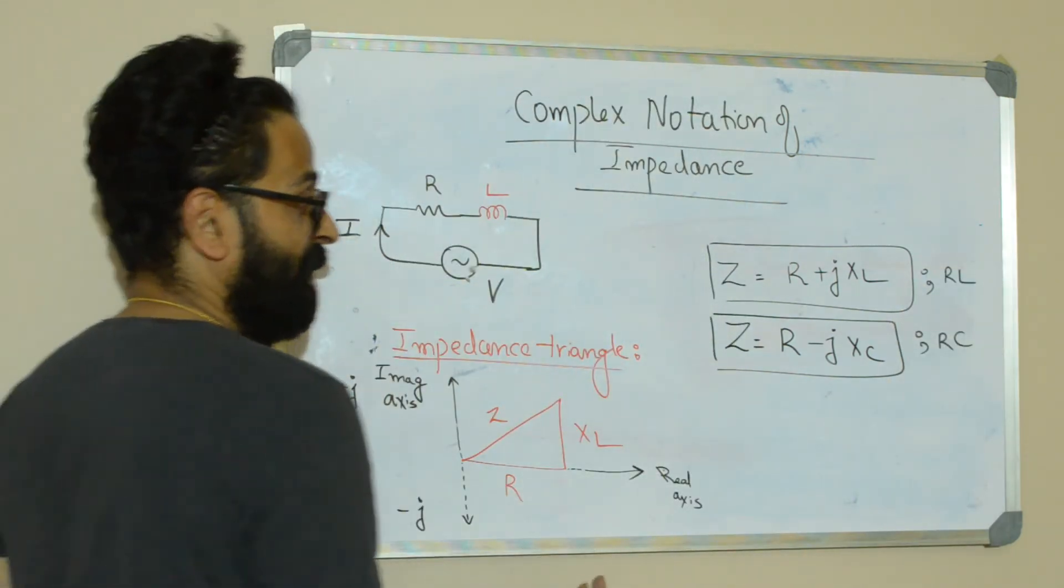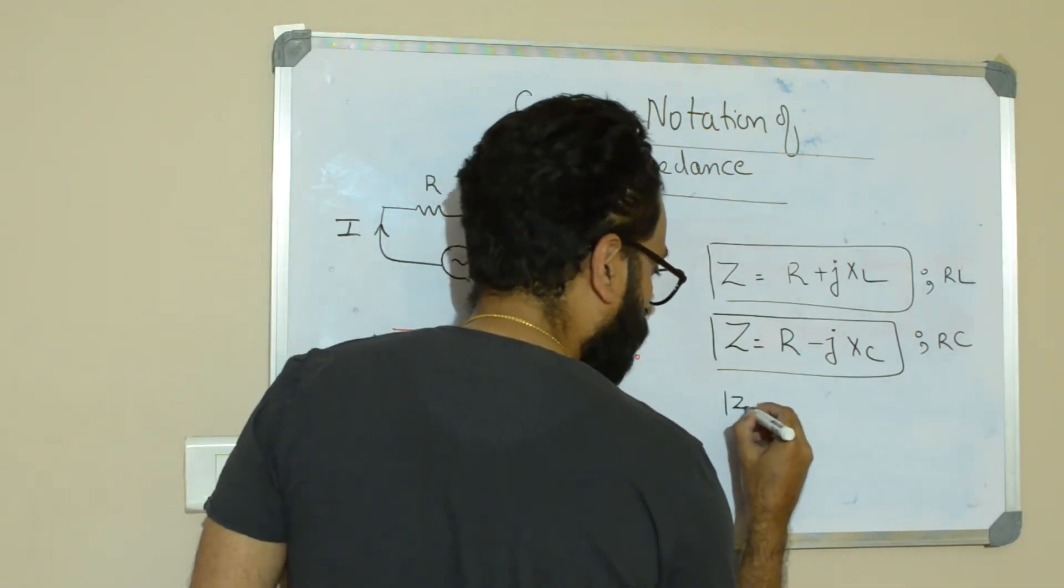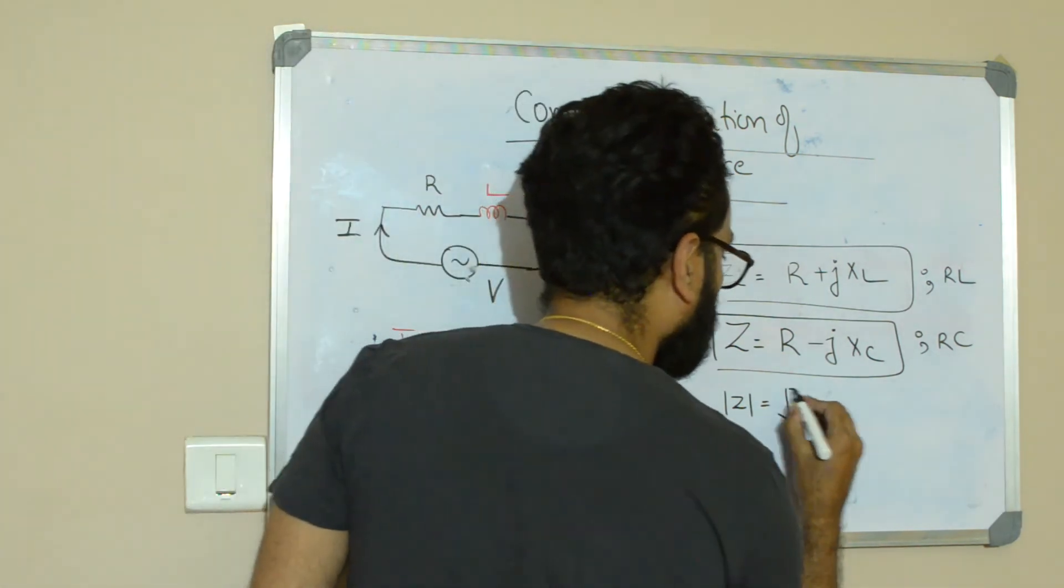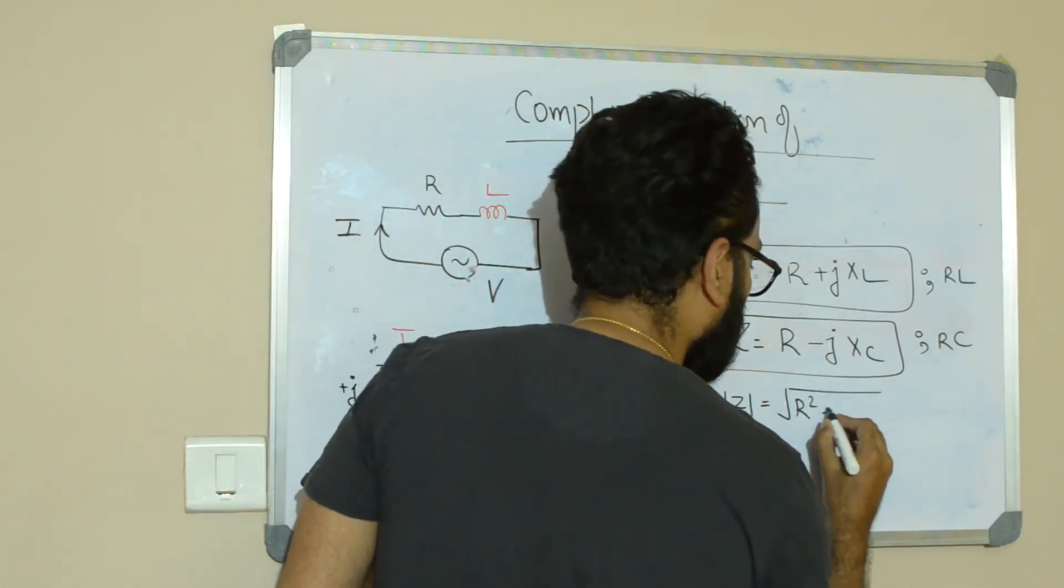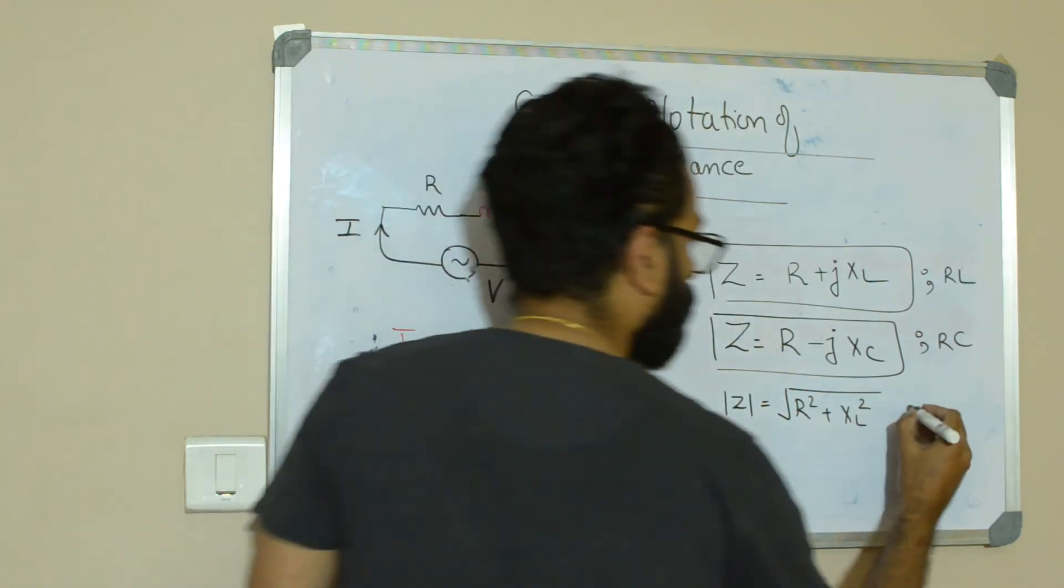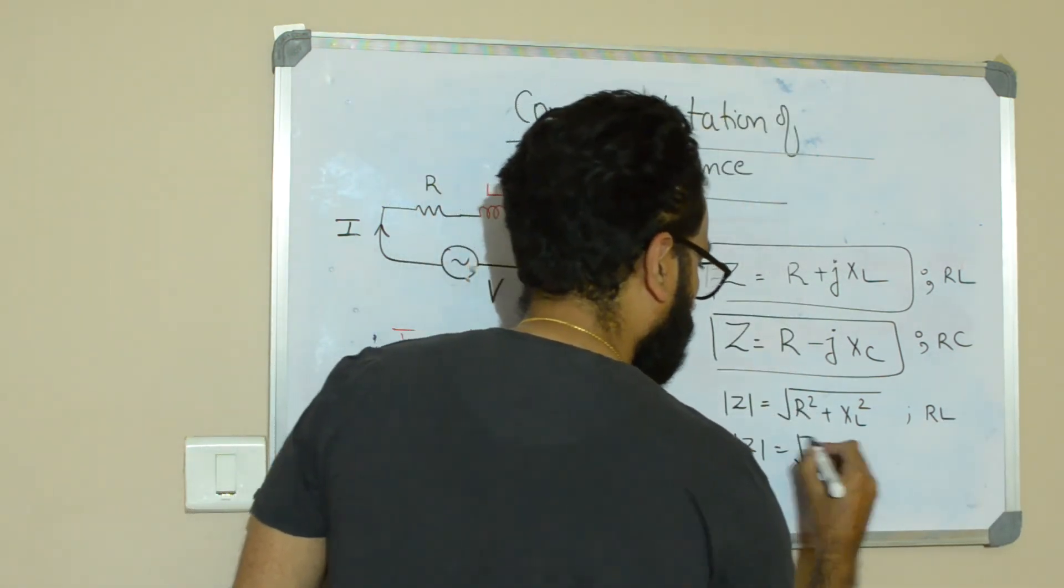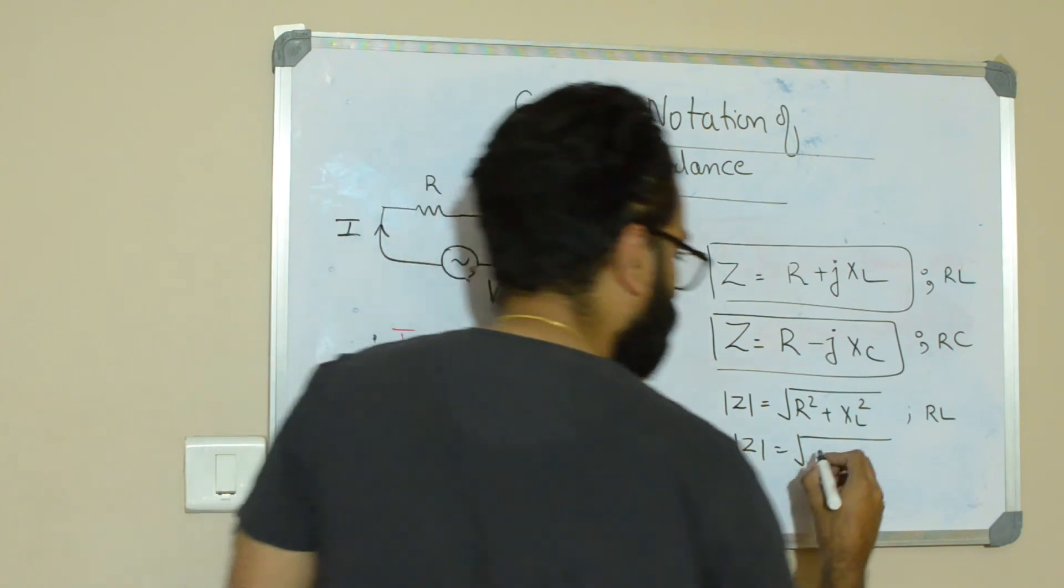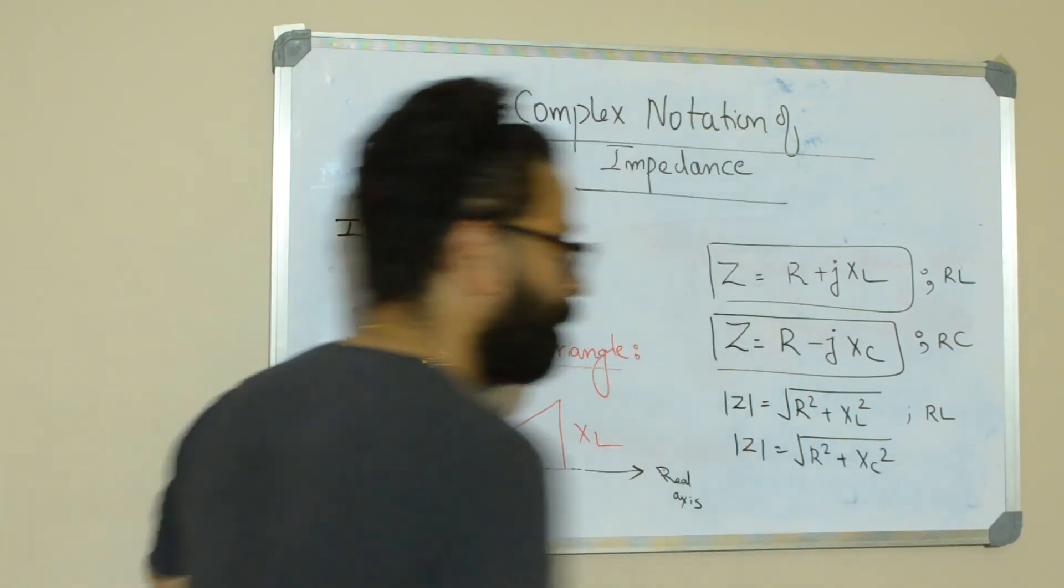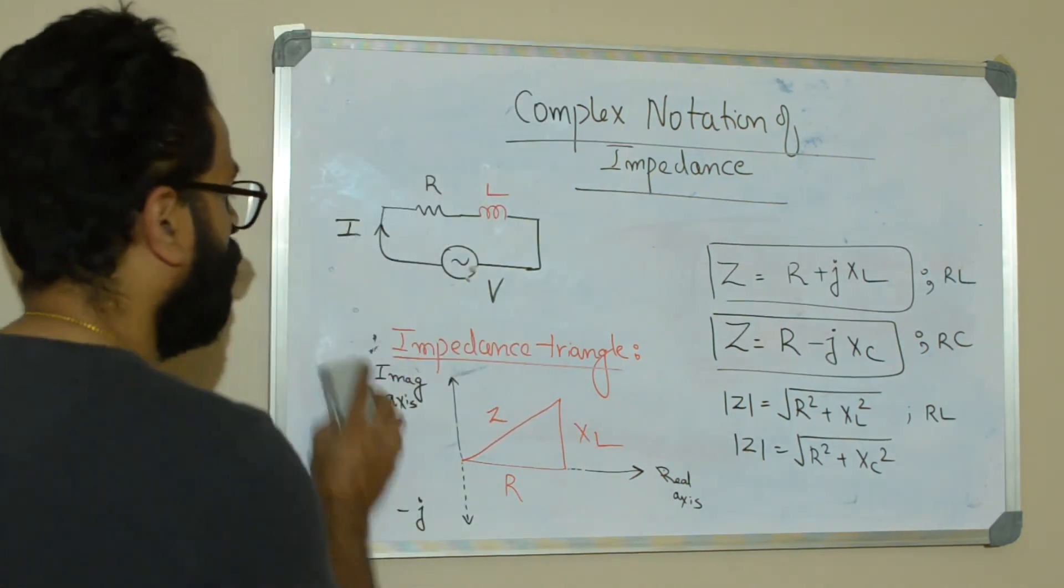So magnitude of impedance, if at all you want to find, you can take mod Z and you can apply Pythagoras here. So mod Z is equal to square root of R squared plus XL squared - this is for RL circuit. And for RC circuit, the modulus of impedance is square root of R squared plus Xc squared. The phase angle can be found from the right angle triangle.